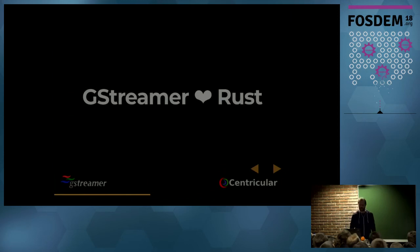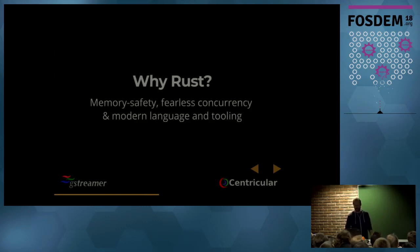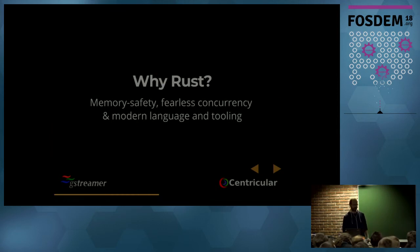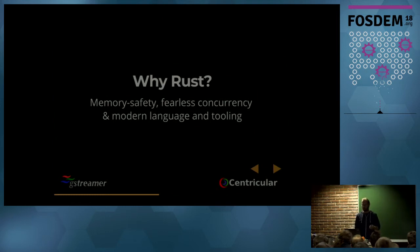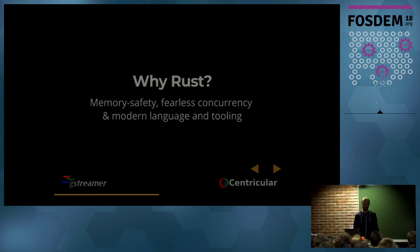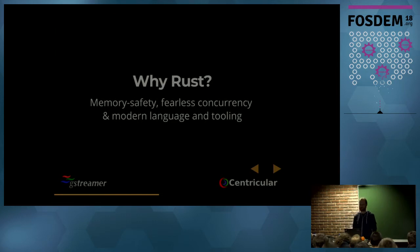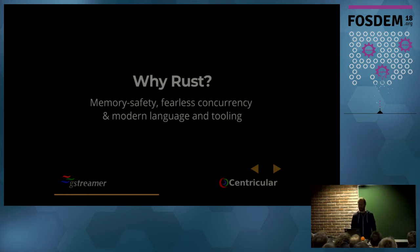Now let's talk about Rust and why it's something like the perfect fit for GStreamer. First, we have the usual suspects: memory safety, fearless concurrency, and that it's a modern language with modern tooling. In GStreamer's past, we've had a number of CVEs and many bugs related to memory safety — which might be security-related or just annoying, like a movie crashing in the middle. Most of these bugs would never have happened with Rust. Sure, there would be other bugs, but not those.